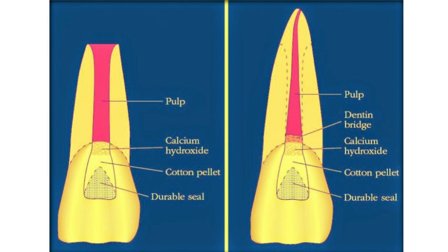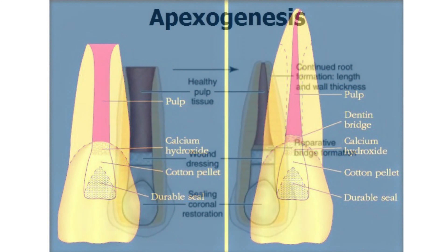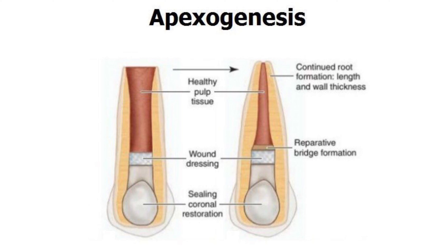All vital pulp therapies performed on immature permanent teeth where the root is still developing are referred to as apexogenesis, because the entire goal is continued root development to form a sturdy root. For example, a pulp exposure less than 24 hours ago on an immature tooth would be treated with direct pulp cap — technically both direct pulp cap and apexogenesis. Apexogenesis is contraindicated in avulsed, necrotic, and non-restorable teeth, and in cases of severe horizontal root fracture.